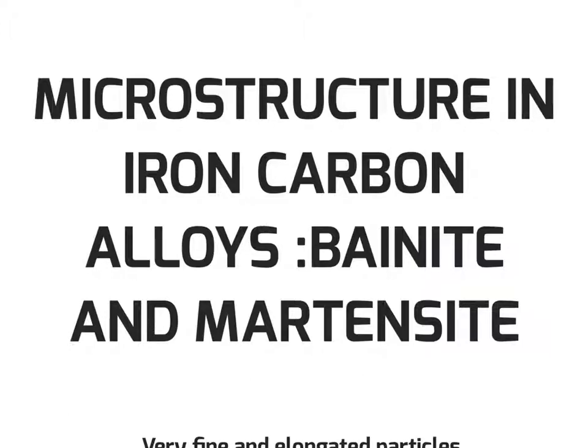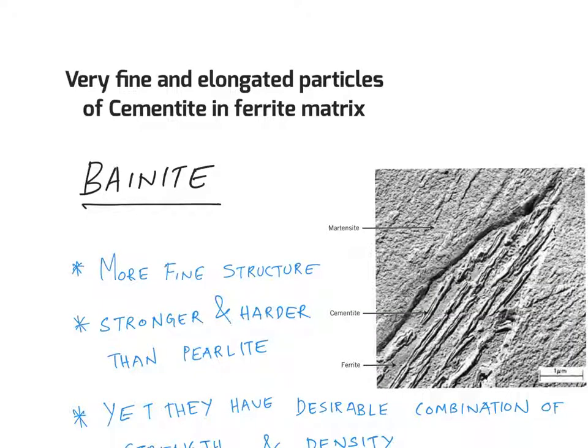Moving ahead, we have two other microstructures that will also be present in iron-carbon alloys. They are bainite and martensite. So we will start the discussion with bainite.